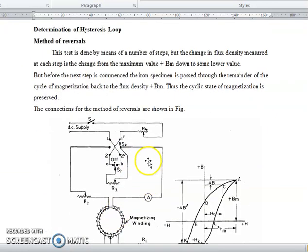Determination of Hysteresis Loop - Method of Reversals: This test is done by a series of steps, but the change in flux density measured at each step is the change from the maximum value of Bm down to some lower value. But before the next step is commenced, the iron specimen is passed through the remainder of the cycle of magnetization back to the flux density Bm. Thus, the cyclic state of magnetization is preserved.